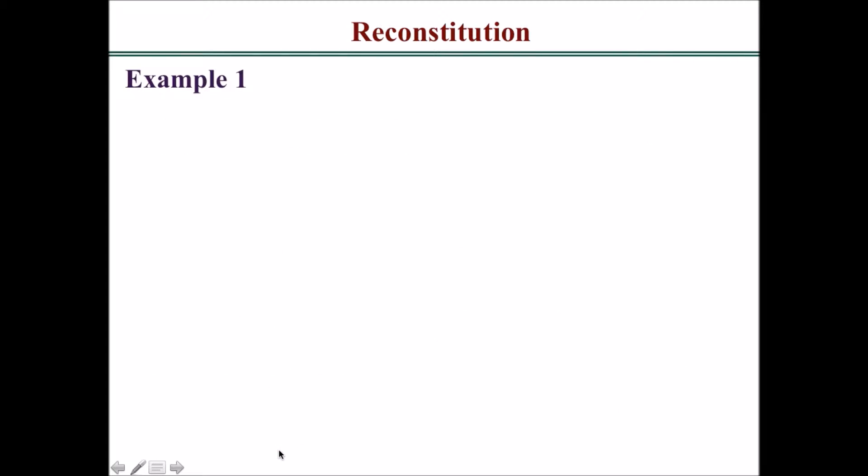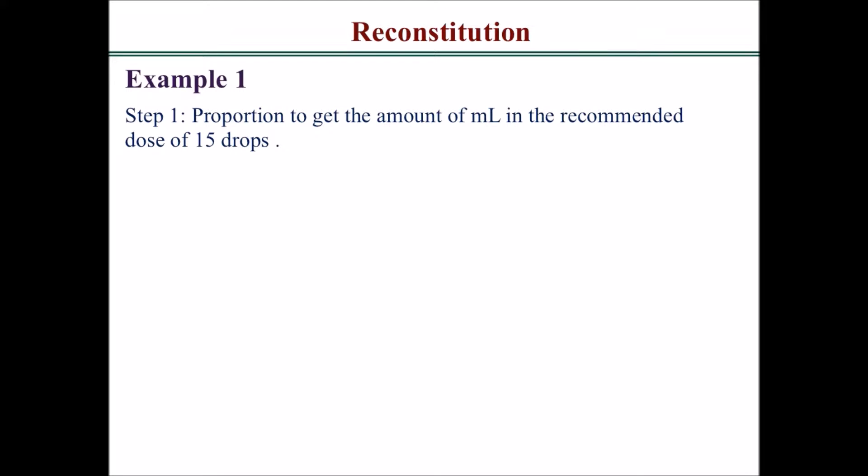Step one: use proportions to get the amount of milliliters in the recommended dose of 15 drops. The dropper has 20 drops per ml and the recommended dose is 15 drops, so when you do proportions you get the answer of 0.75 milliliters.